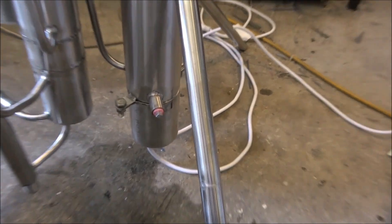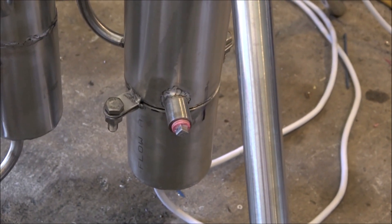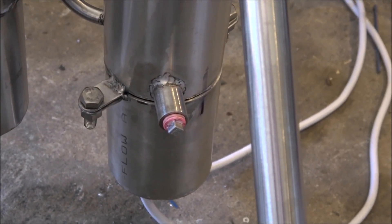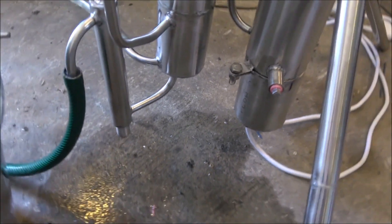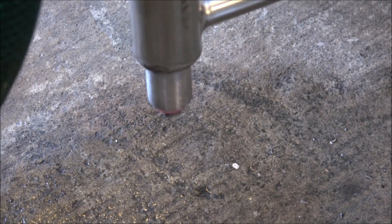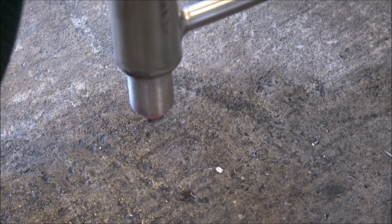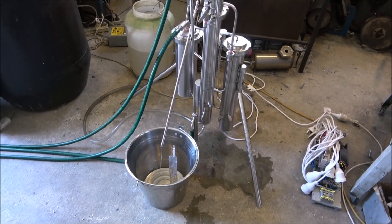Here down the bottom is a drain plug for the steam generator, and here down the bottom another drain plug, and this one for the column. The still is running.